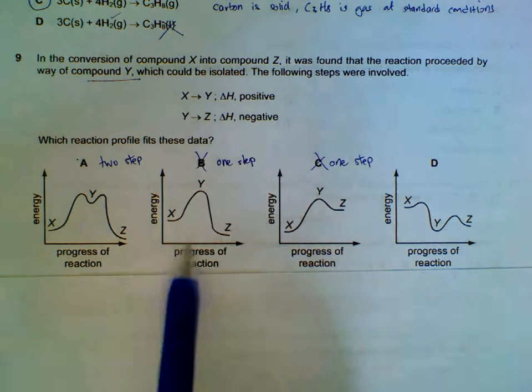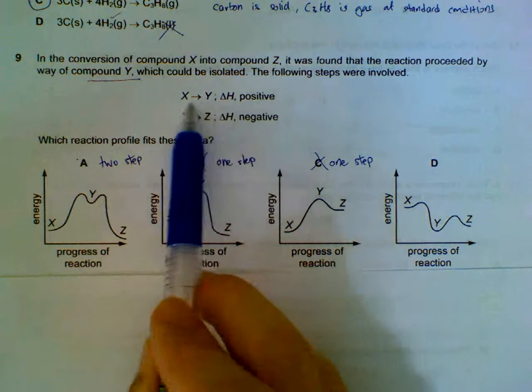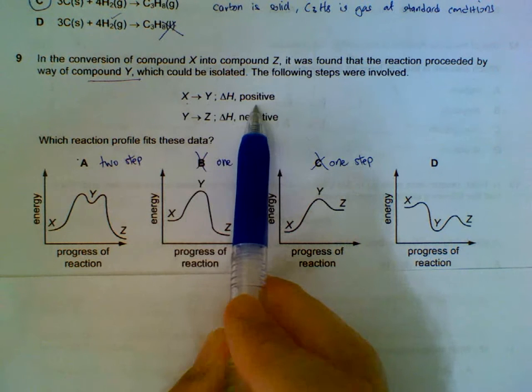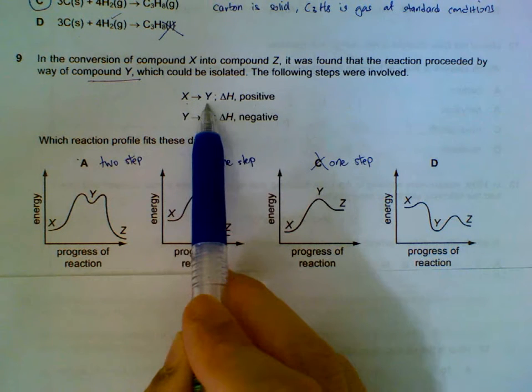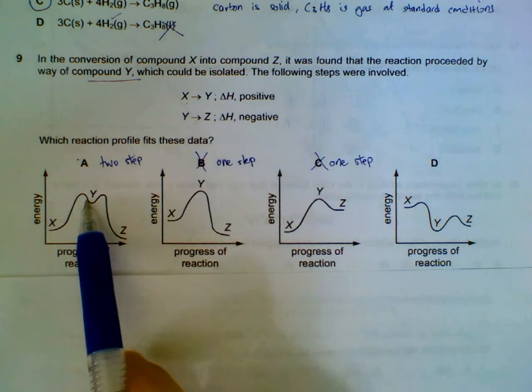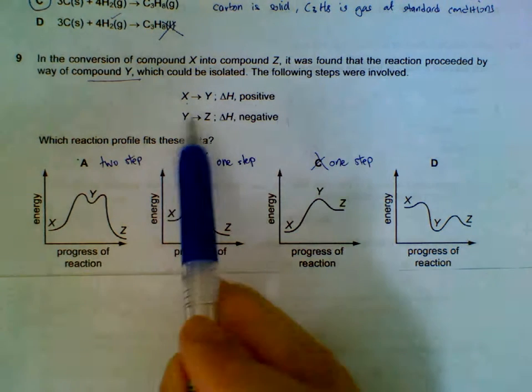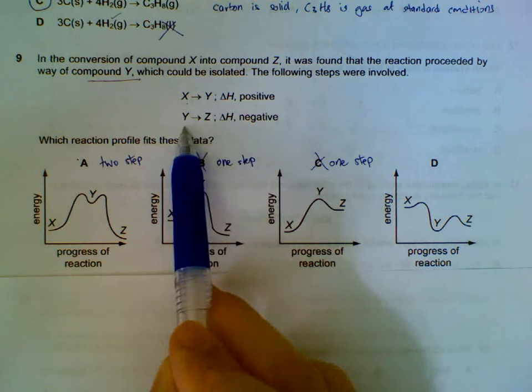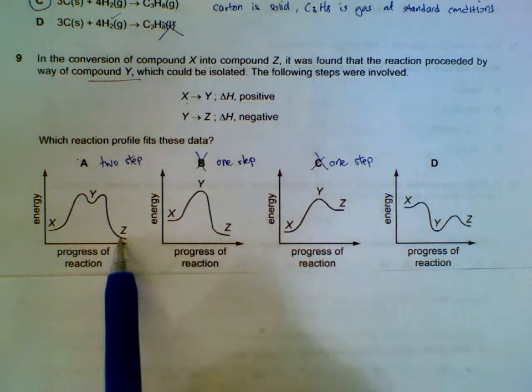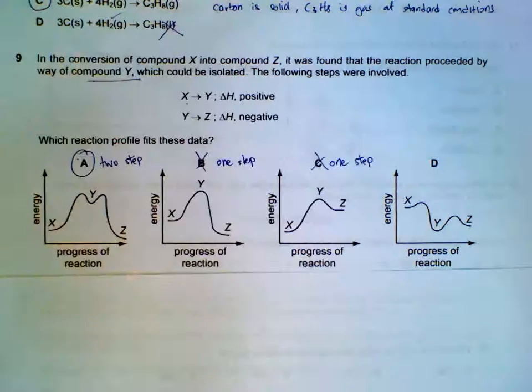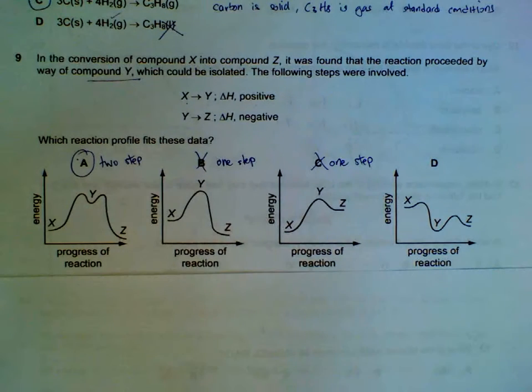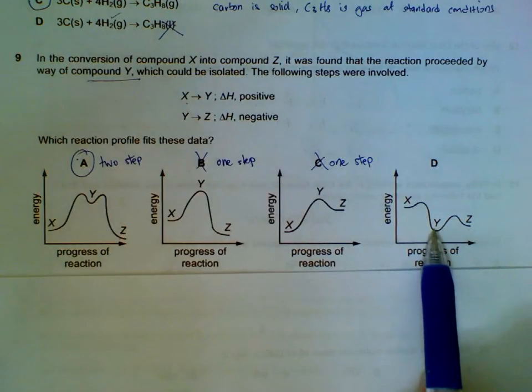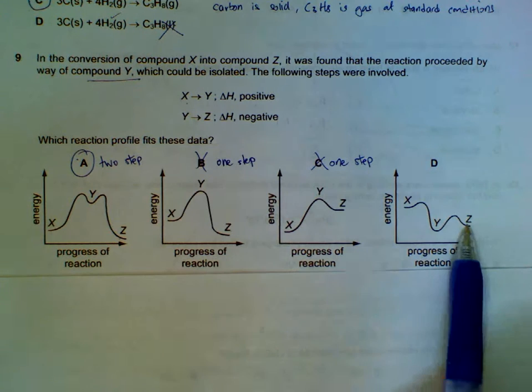And then between the 2 steps we have to check that. X becoming Y. The heat of reaction is positive. So Y is located higher than X. Y becoming Z is negative. That means Z is lower than Y. So that's described by the graph A. Here X to Y is a negative change. Y to Z is a positive change.